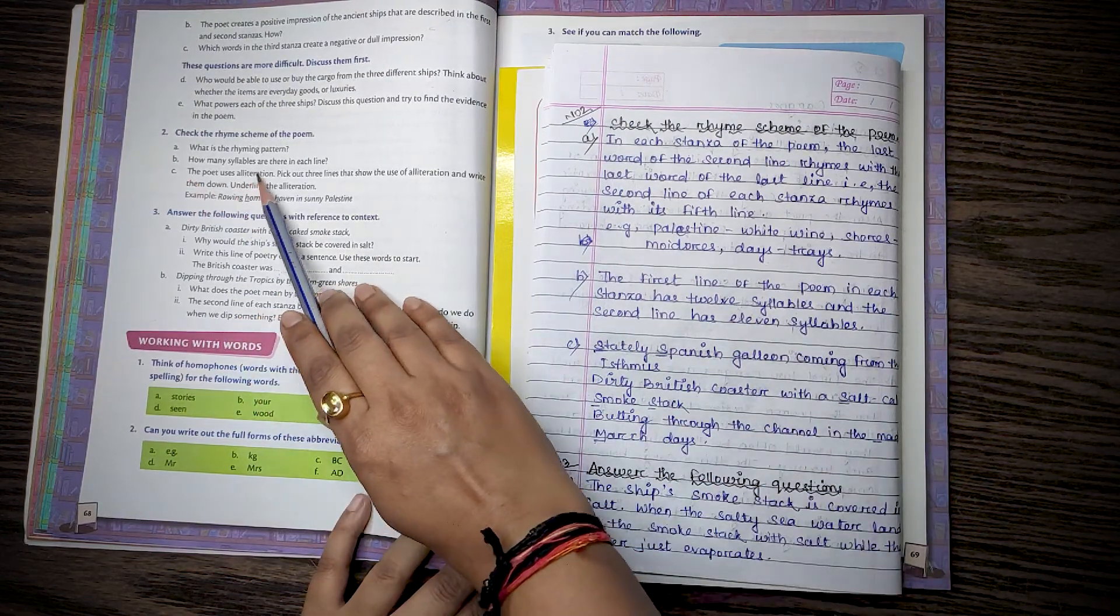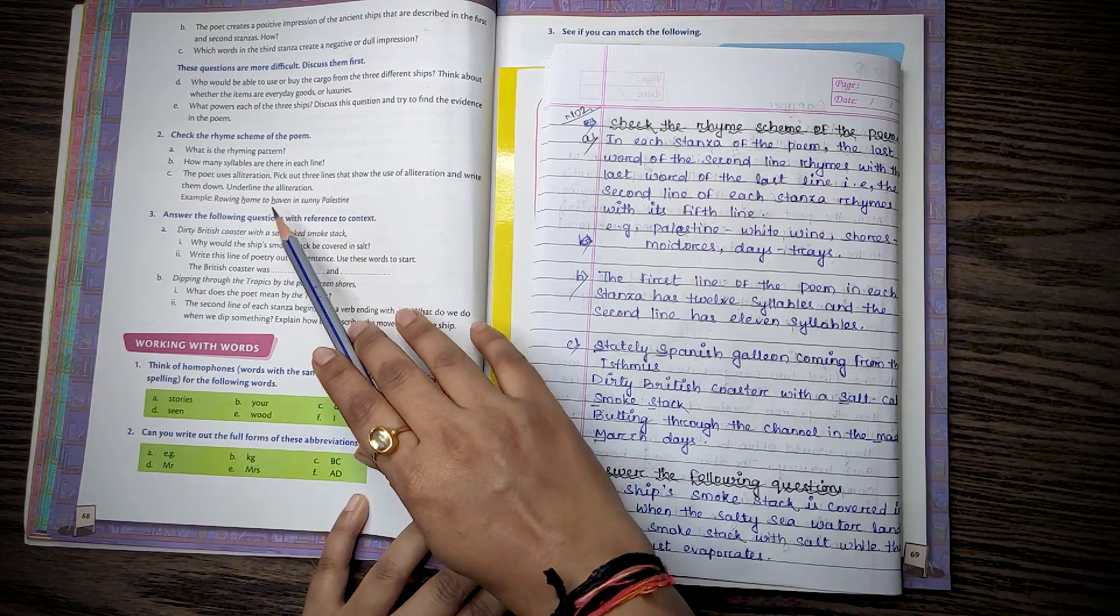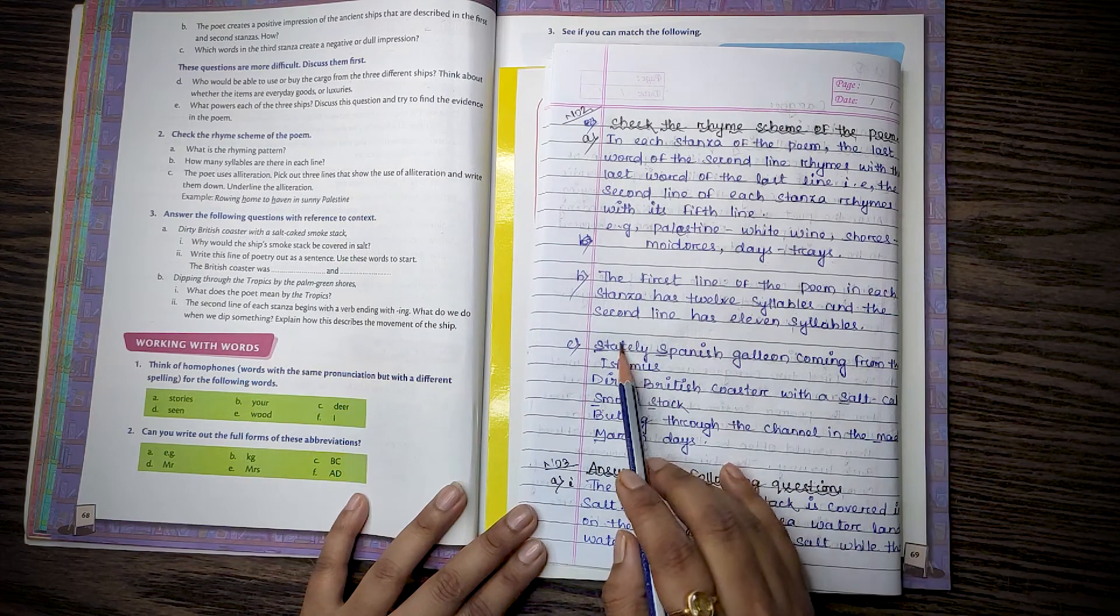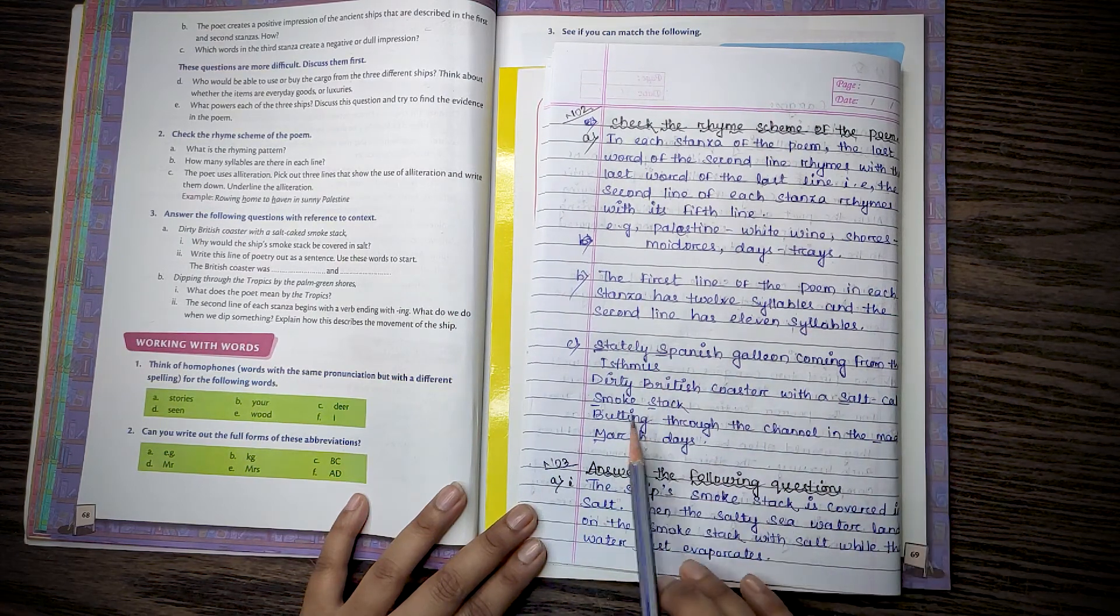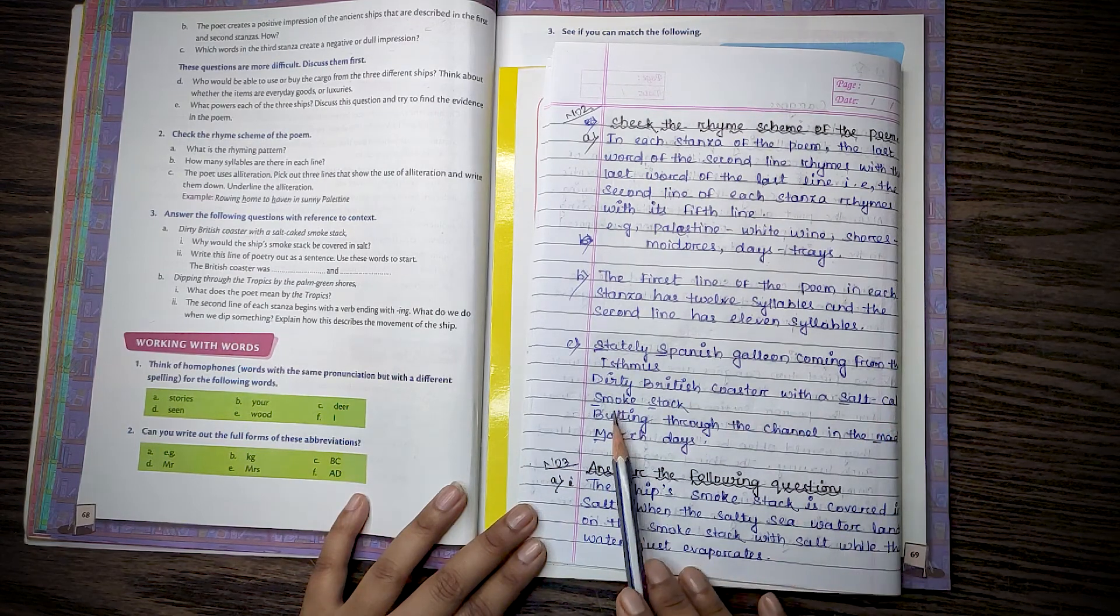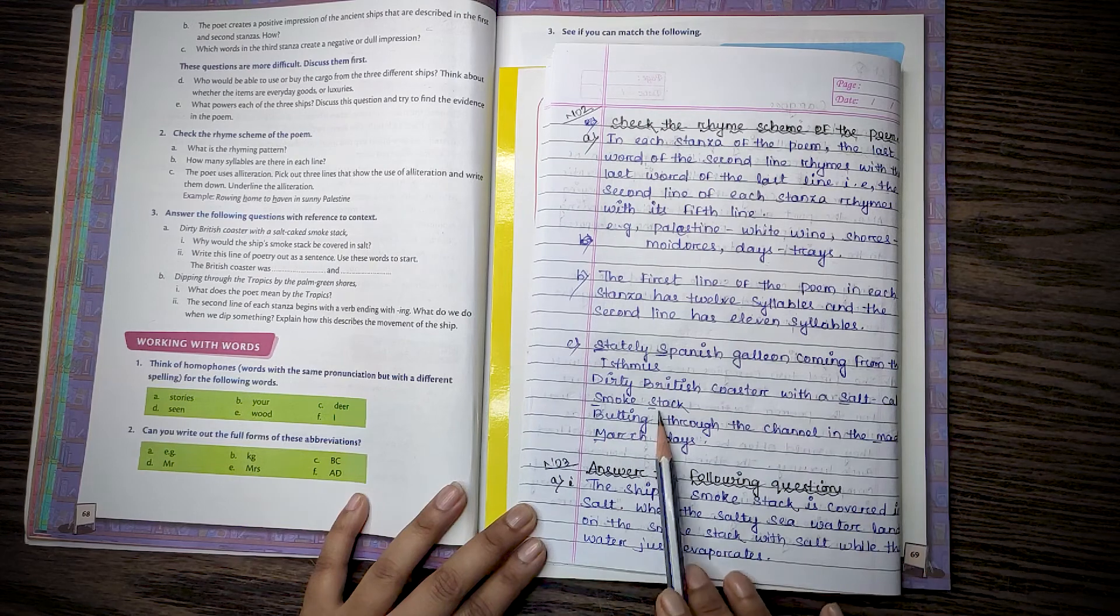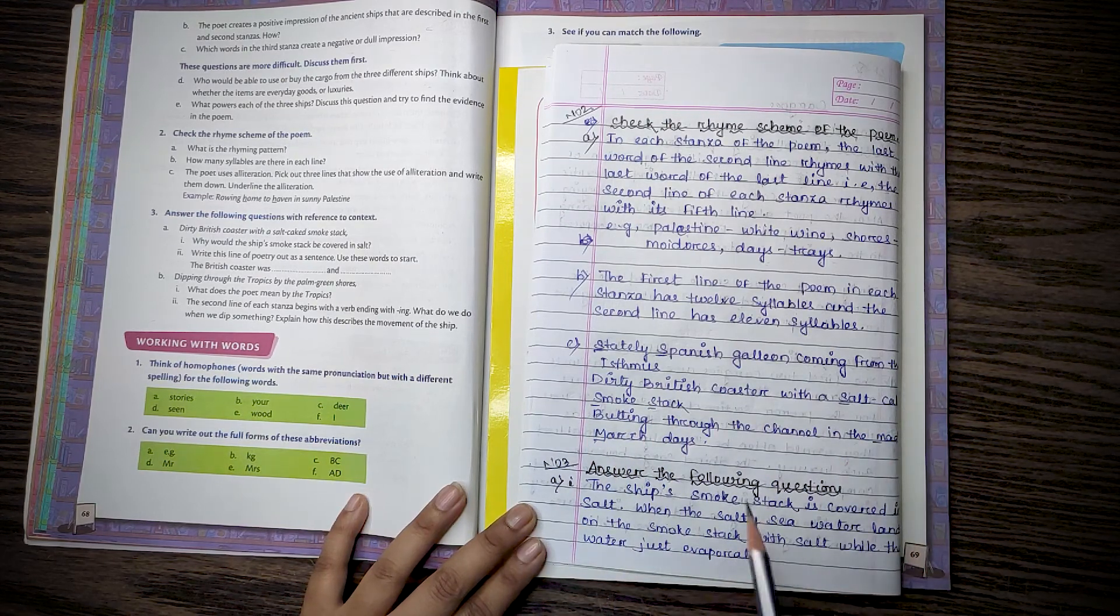Then C. The poet uses alliteration. Pick out the three lines that use the alliteration and write them down. Underline the alliteration. Stately Spanish galleon coming from the Isthmus. Here S and S is the alliteration. Dirty British coaster with the salt caked smokestack. S, S, S. Butting through the channel in the mad March days. Mad and March.